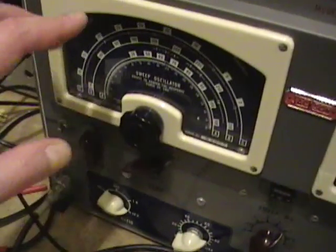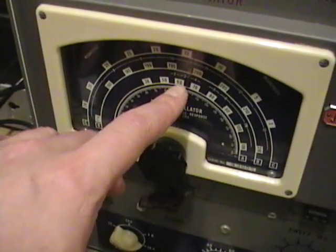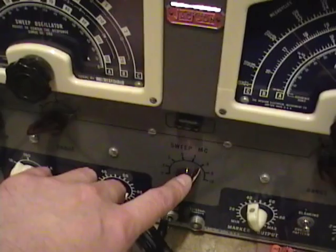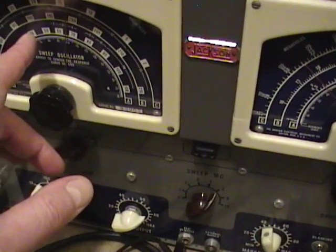I've got my sweep set around about 14MHz with a 3MHz width, so it's going from about 11MHz to 17MHz. And here's what it looks like.